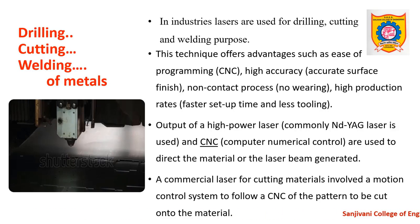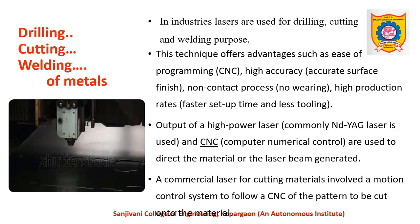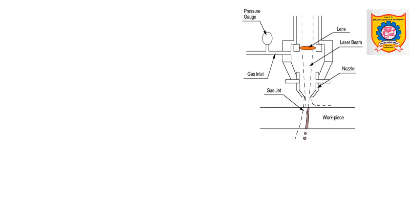A commercial laser for cutting materials involves a motion control system to follow the CNC pattern to be cut onto the material. This is a schematic of the laser cutting tool. It consists of a laser beam which passes through a lens and is focused. This focused laser beam is made to pass through a nozzle and is made to be incident on the work piece, which is ready for either drilling or cutting. It has a gas input and the pressure of the gas is controlled by a pressure gauge.